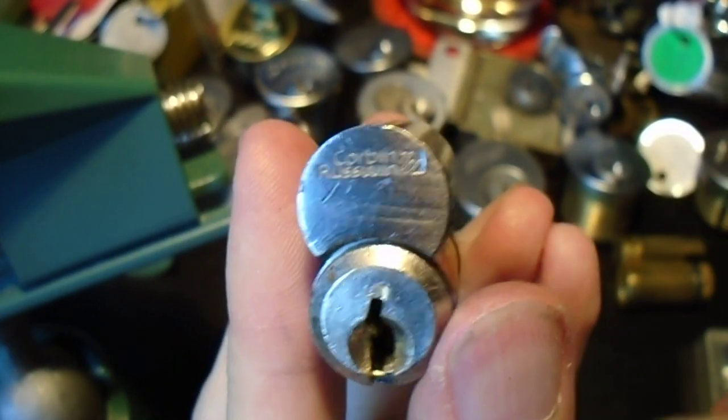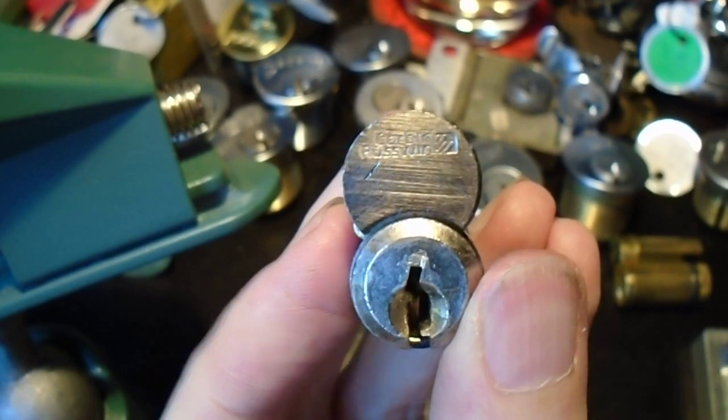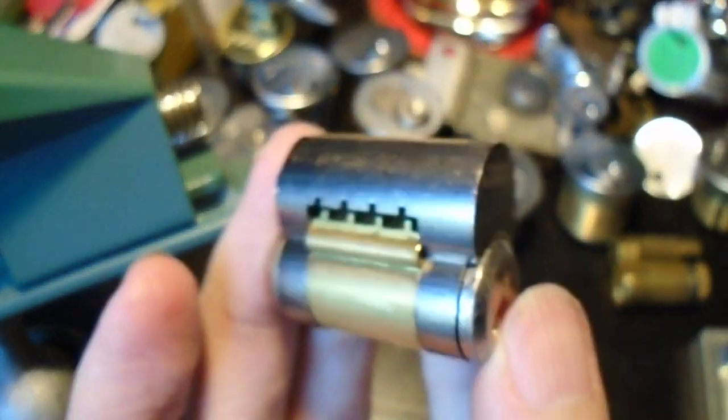Hey everybody. So we're going to look at some interchangeable core locks again. This one is a Corbin-Ruswin large format interchangeable core.